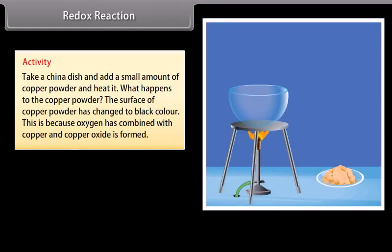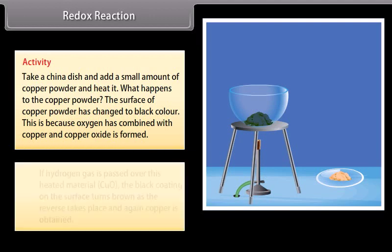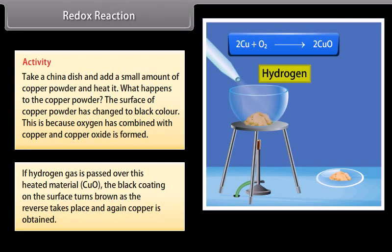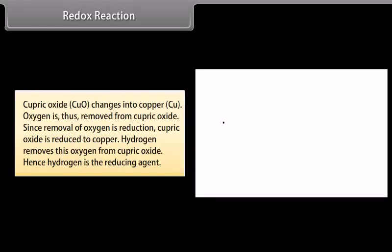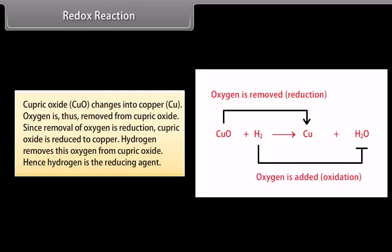Take a china dish and add a small amount of copper powder and heat it. What happens to copper powder? The surface of copper powder has changed to black color. This is because oxygen has combined with copper and copper oxide is formed. If hydrogen gas is passed over this heated material, CuO, the black coating on the surface turns brown as the reverse takes place and again copper is obtained. Cupric oxide changes into copper. Oxygen is thus removed from cupric oxide. Since removal of oxygen is reduction, cupric oxide is reduced to copper. Hydrogen removes this oxygen from cupric oxide. Hence, hydrogen is the reducing agent.